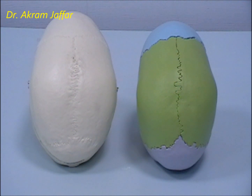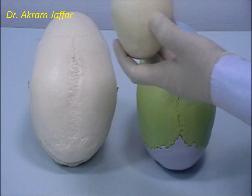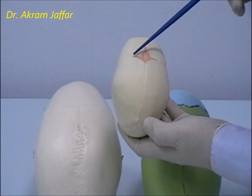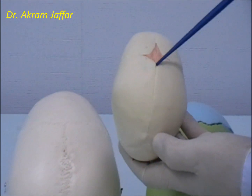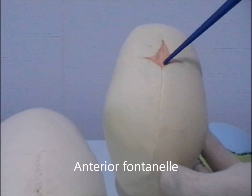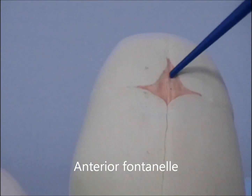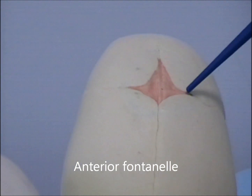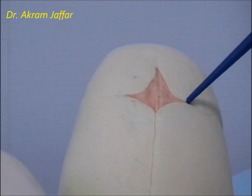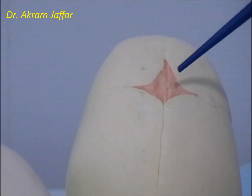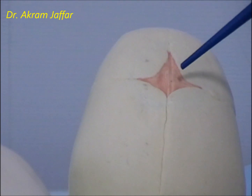The bregma is the site of the anterior fontanelle in the infant skull. In this infant skull you can see that at the junction of the coronal and sagittal sutures is the site of the bregma. It contains soft tissue and the bone has not yet been ossified. The shape of the anterior fontanelle is generally diamond-shaped, and it usually becomes ossified by the second year of age.